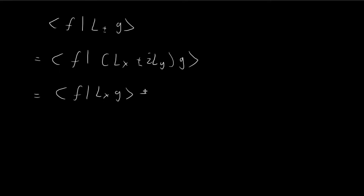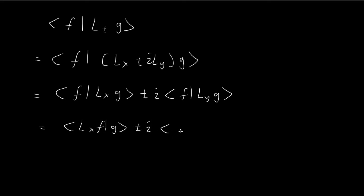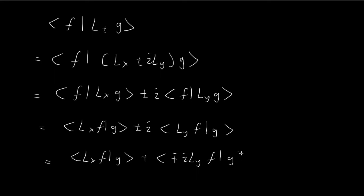So this becomes ⟨F | Lx G⟩ ± i⟨F | Ly G⟩. Since Lx and Ly are operators for observables, we know they are Hermitian operators, meaning we can move the operator to the front without changing the value of the inner product. This gives us ⟨Lx F | G⟩ ± i⟨Ly F | G⟩. Now we absorb the ±i inside — because the i is in the left-hand component, it becomes conjugated, which flips the sign of the imaginary term, giving ∓i.